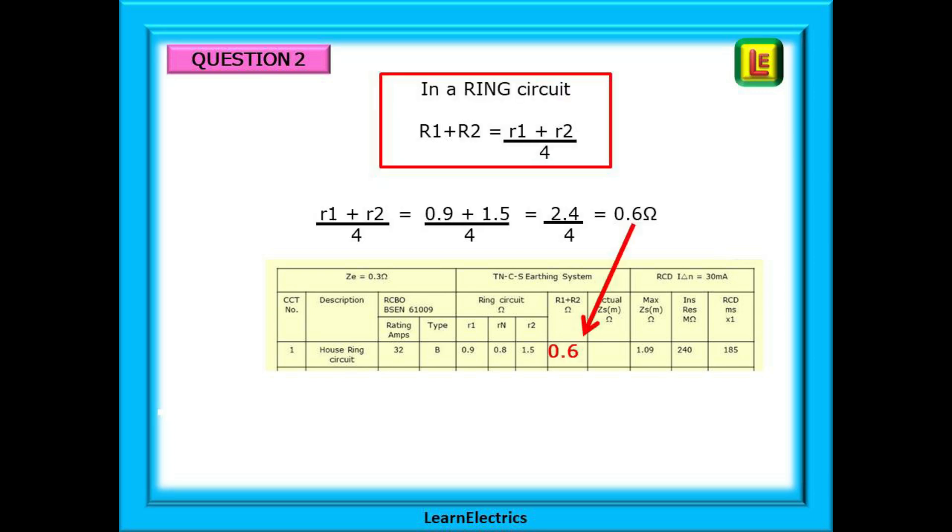This is a ring circuit and at the top is the formula that you need. Little R1 and little R2 are given in the chart. Simply add them together and divide by 4 to find R1 plus R2. So 0.9 plus 1.5 is 2.4. Divide this by 4 and we have our answer. R1 plus R2 is 0.6 ohms.